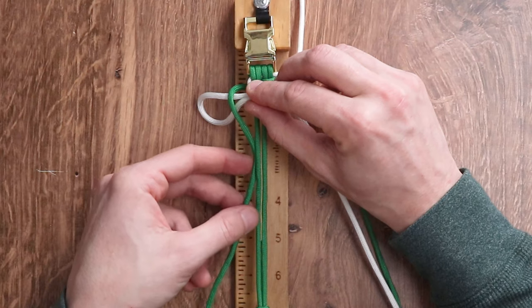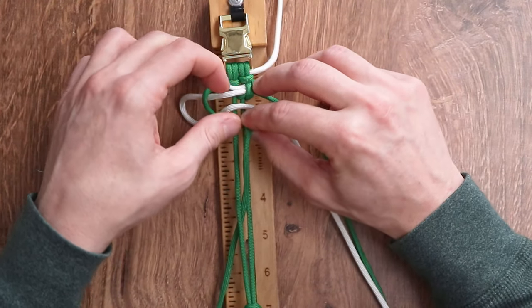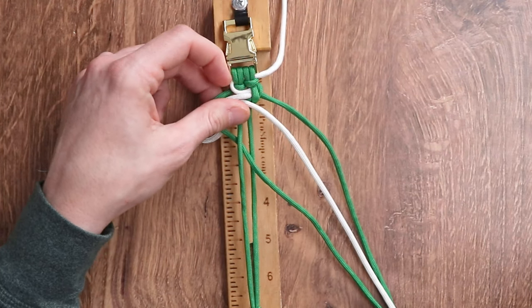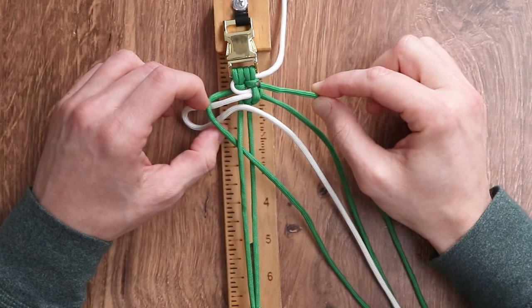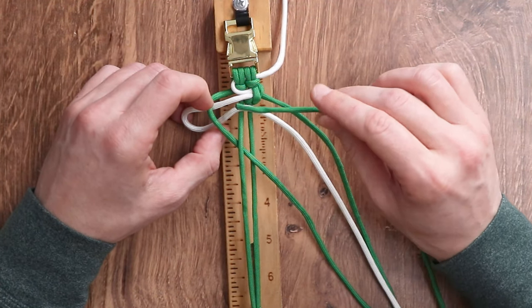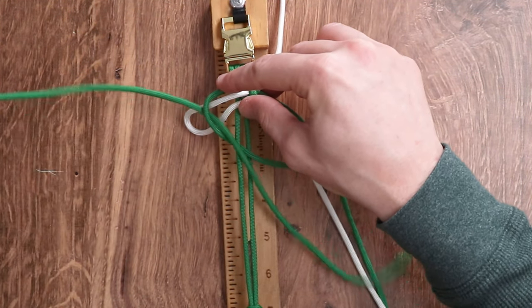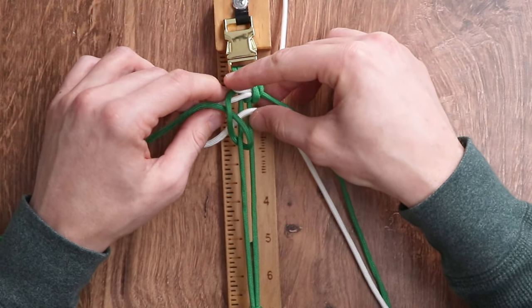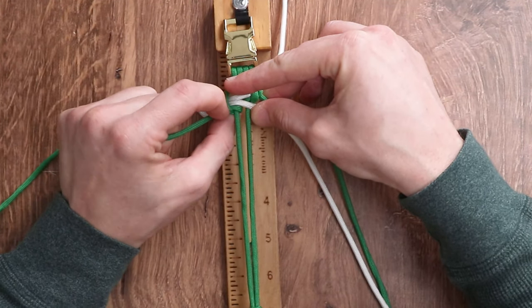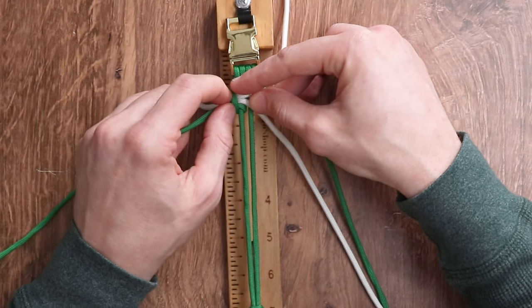And then we're going to do the same thing. We're going to bring it under the left inner strand. And once we get to the end of our working strand, we want to put it between the white and the green paracord. And once again, we do want to tighten up that knot that we just made, and we do want to keep a loop on the left side with our white paracord.